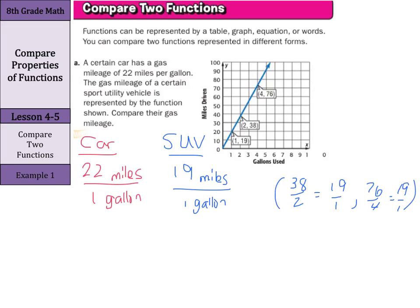Now, to write our concluding statement here, the car has the higher or greater gas mileage. As 22 miles per one gallon is greater than 19 miles per one gallon.